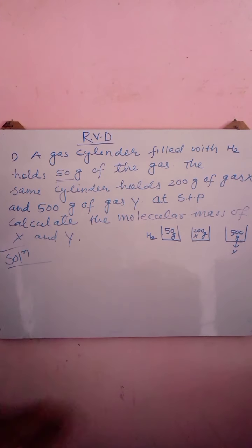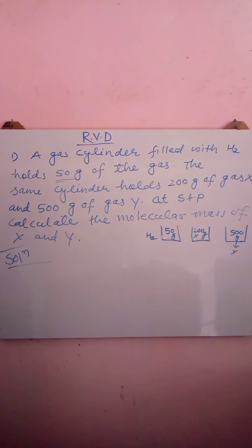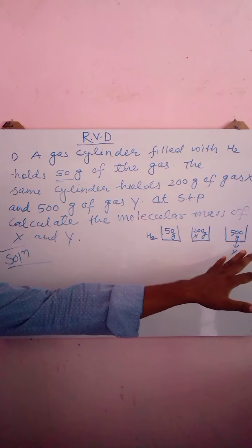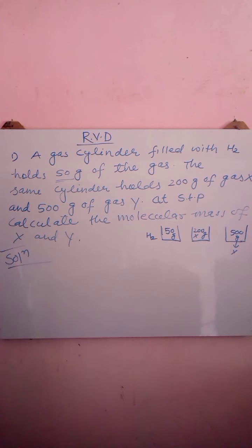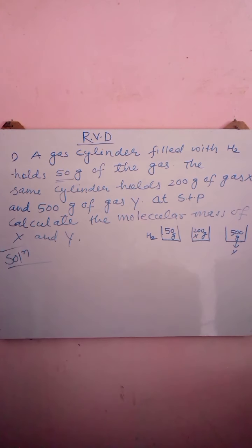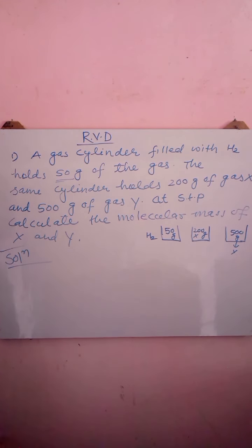We have a gas cylinder containing 50 grams of hydrogen gas. The same gas cylinder contains 200 grams of gas X and 500 grams of gas Y. Since the cylinder is the same, the volume is the same. We know vapor density and relative molecular mass have a relation, so we can find molecular mass using RVD. We know 2 × RVD = molecular mass.